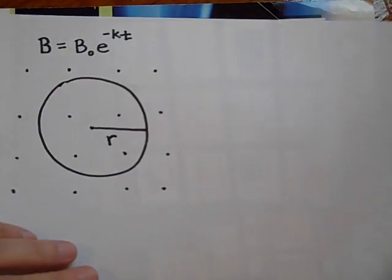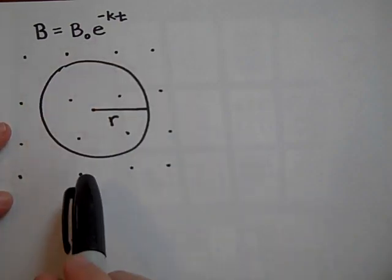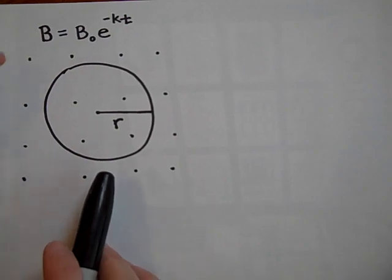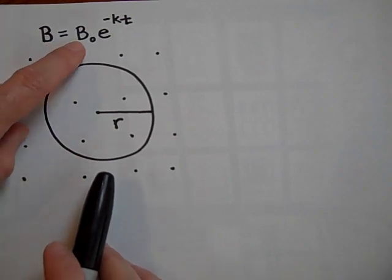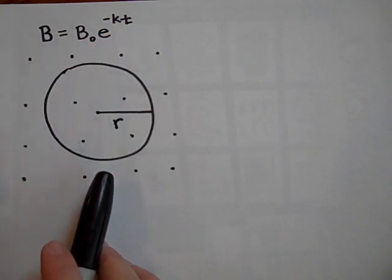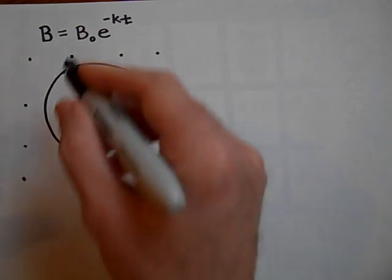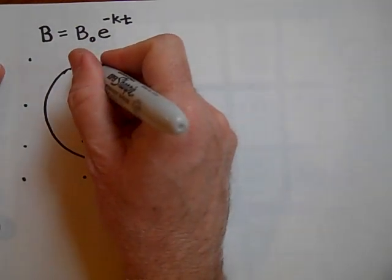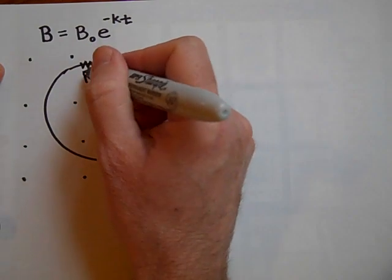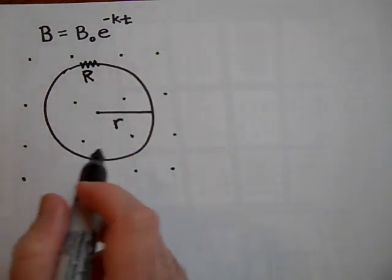For the next one I have a circular loop of wire and the magnetic field is coming out at us because of the dots and it's changing at a rate of B naught which is a constant times E to the negative KT. Can you tell me if the radius of this hoop is R and the loop has a total resistance of capital R. So R is resistance and little r is the radius.